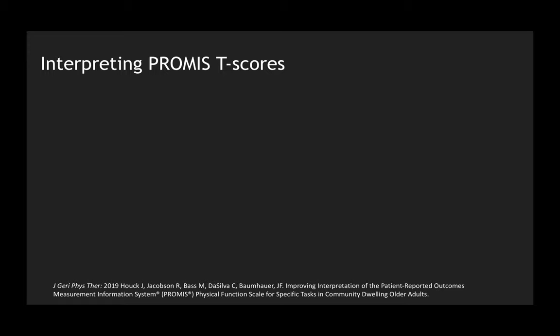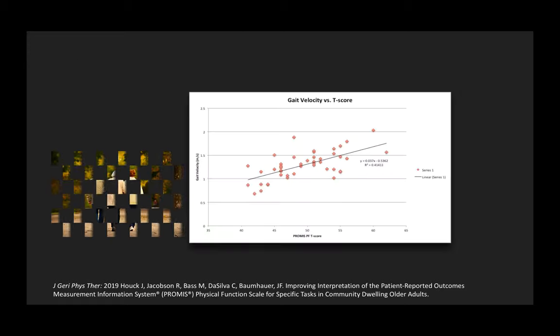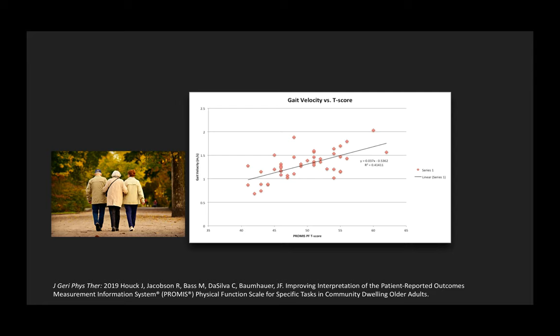So let's look at a validation study of ours. We correlated gait speed, shown here on the y-axis, with PROMIS physical function T-scores in community-dwelling elderly participants. The correlation supported that people with higher walking speeds also reported higher T-scores with a T-score of 48 associated with a walking speed of 1.24 meters per second. Very close to normal.